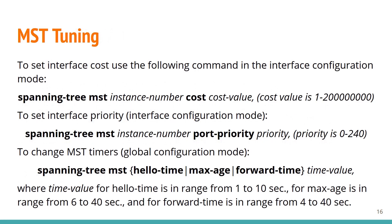We can also do some MST tuning. To set interface cost in interface configuration mode: 'spanning-tree MST [instance number] cost [value]', where cost is in the range 1 to 200,000,000. To set interface priority: 'spanning-tree MST [instance number] port-priority [value]', where priority is 0 to 240 in increments of 16. To change MST timers in global configuration mode: 'spanning-tree MST hello-time [1-10s]', 'max-age [6-40s]', and 'forward-time [4-40s]'.